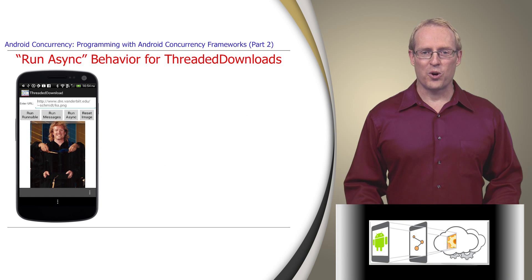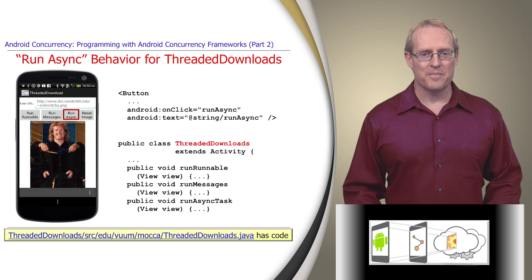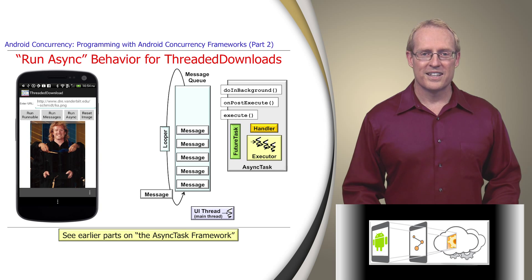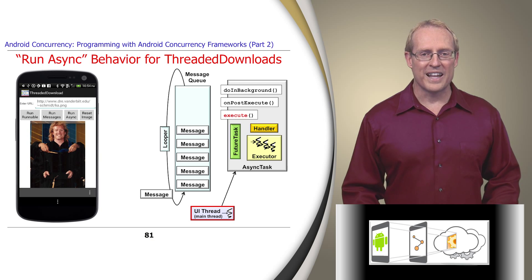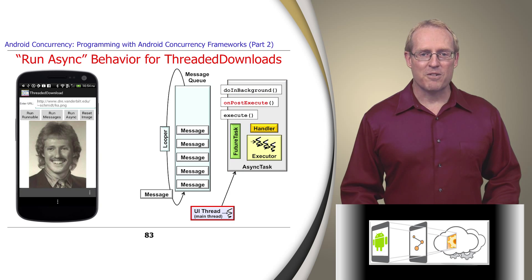We'll now analyze the third and final concurrency model, which is triggered when the user selects the RunAsync button on the user interface. This selection initiates a call to the RunAsyncTask method in the Threaded Downloads class, shown at this path name. This method uses the AsyncTask framework, which executes long-duration operations in one or more background threads and then gives the user interface thread a chance to process the results. The Threaded Downloads application uses this framework to retrieve and display an image by calling the ExecuteTemplate method on an AsyncTask object, which downloads the image in a background thread managed internally by the AsyncTask framework. When the image has been downloaded, the framework invokes a hook method that displays the downloaded image in the context of the user interface thread.